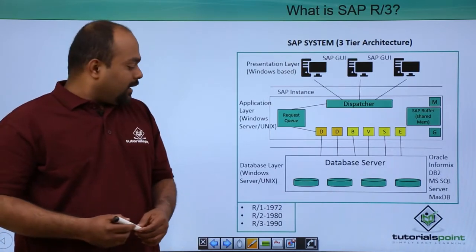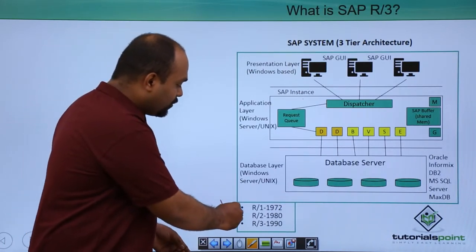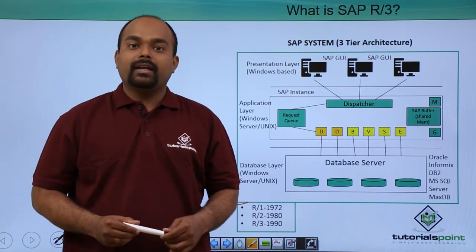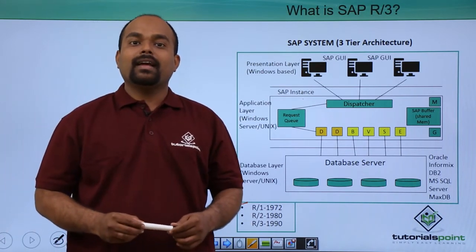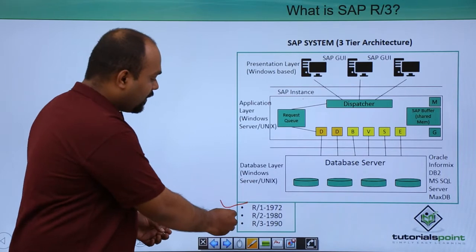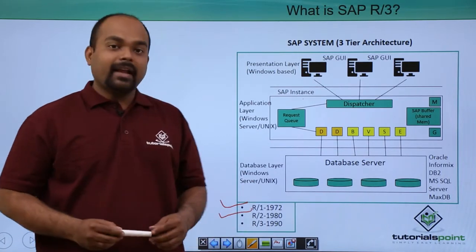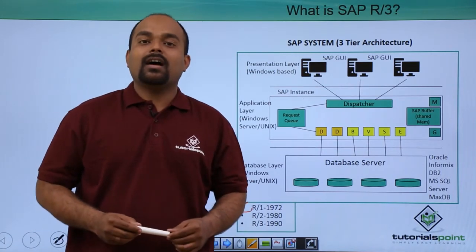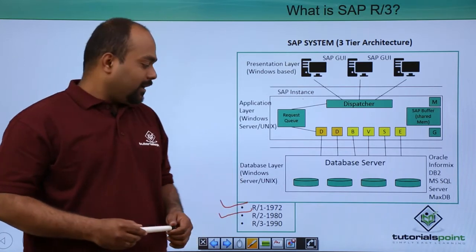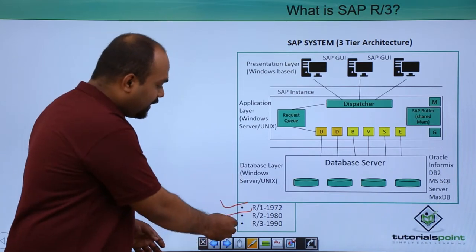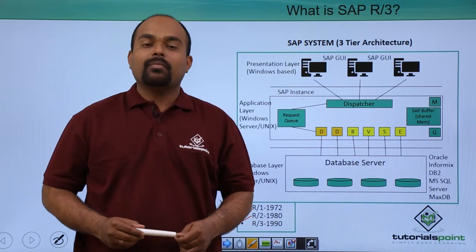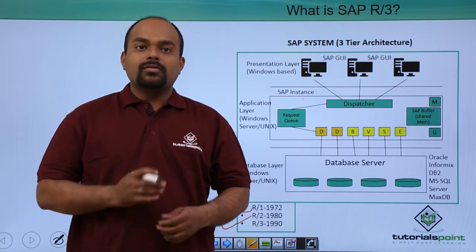In 1972, the R1 product was developed by SAP. In 1980, the second product R2 was developed by SAP. In 1990, the SAP R3 product was developed.